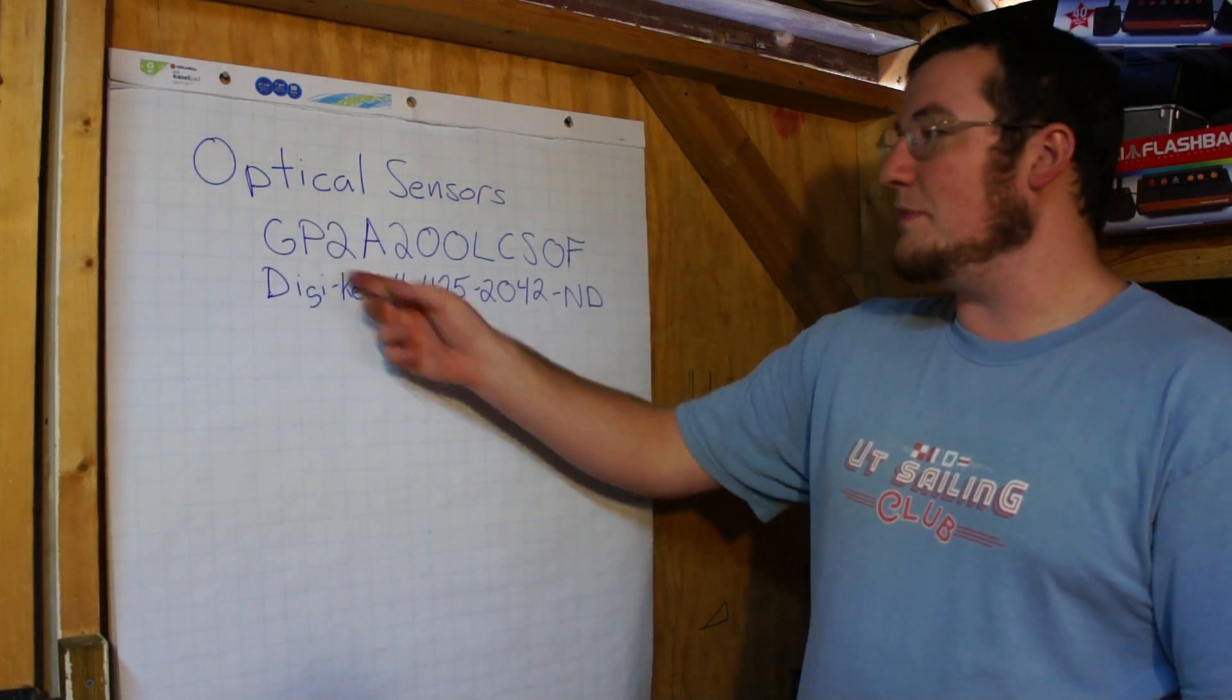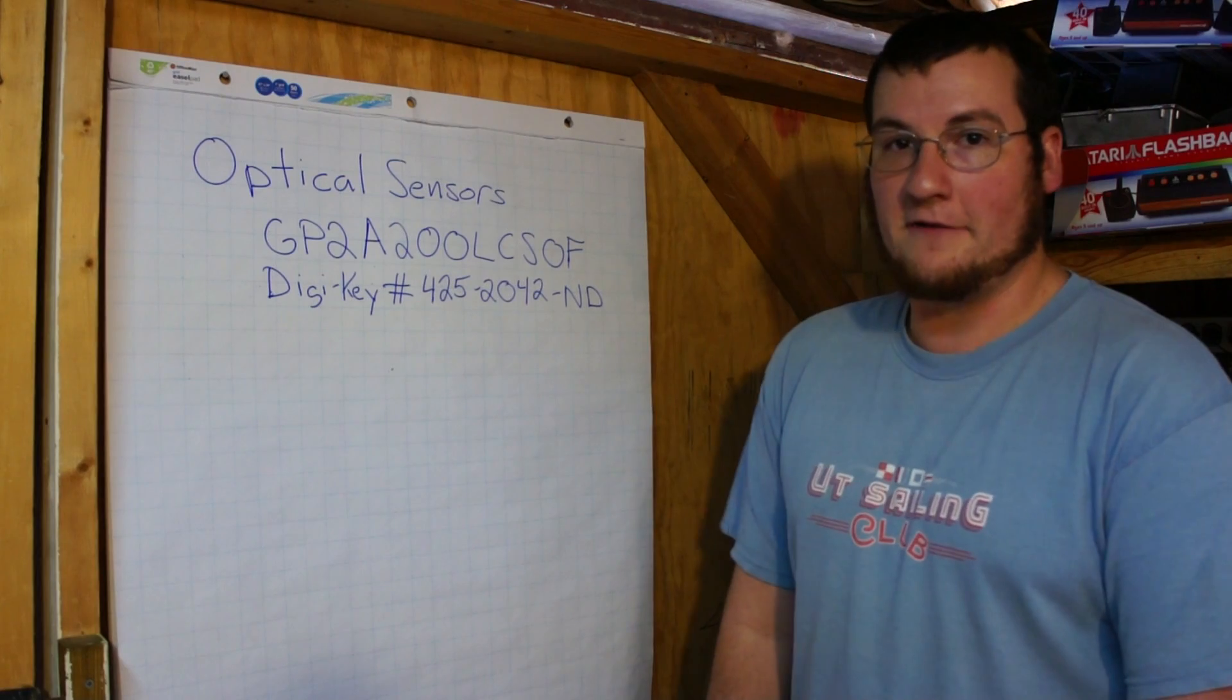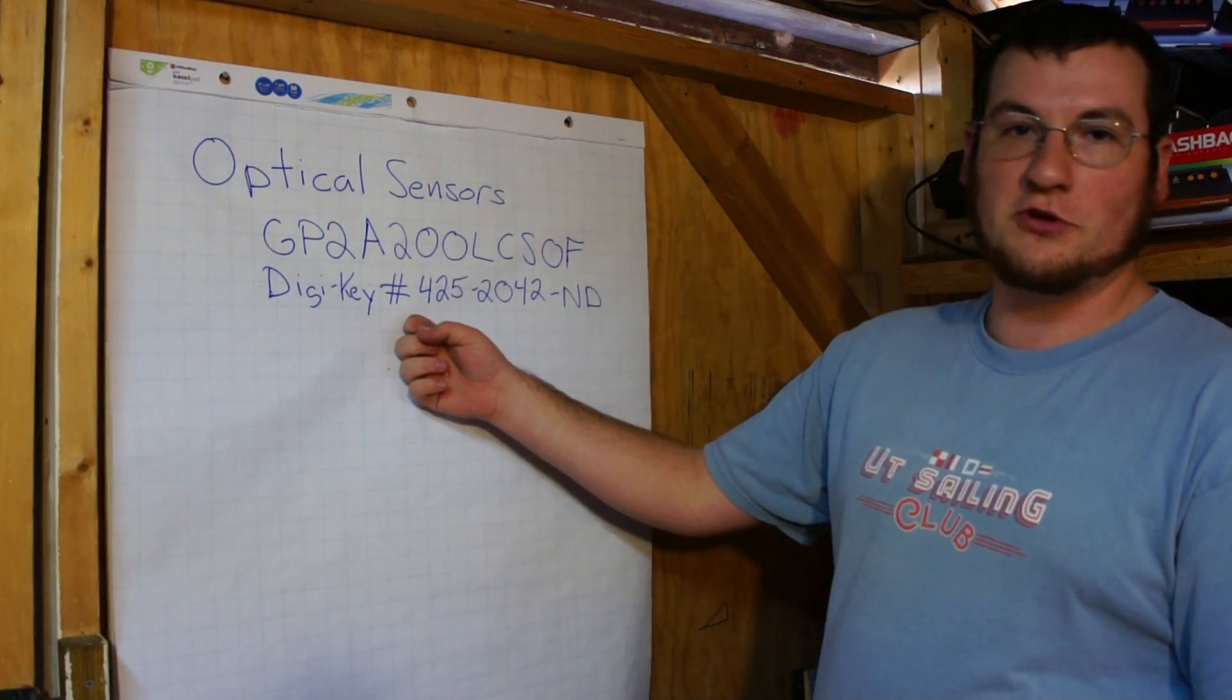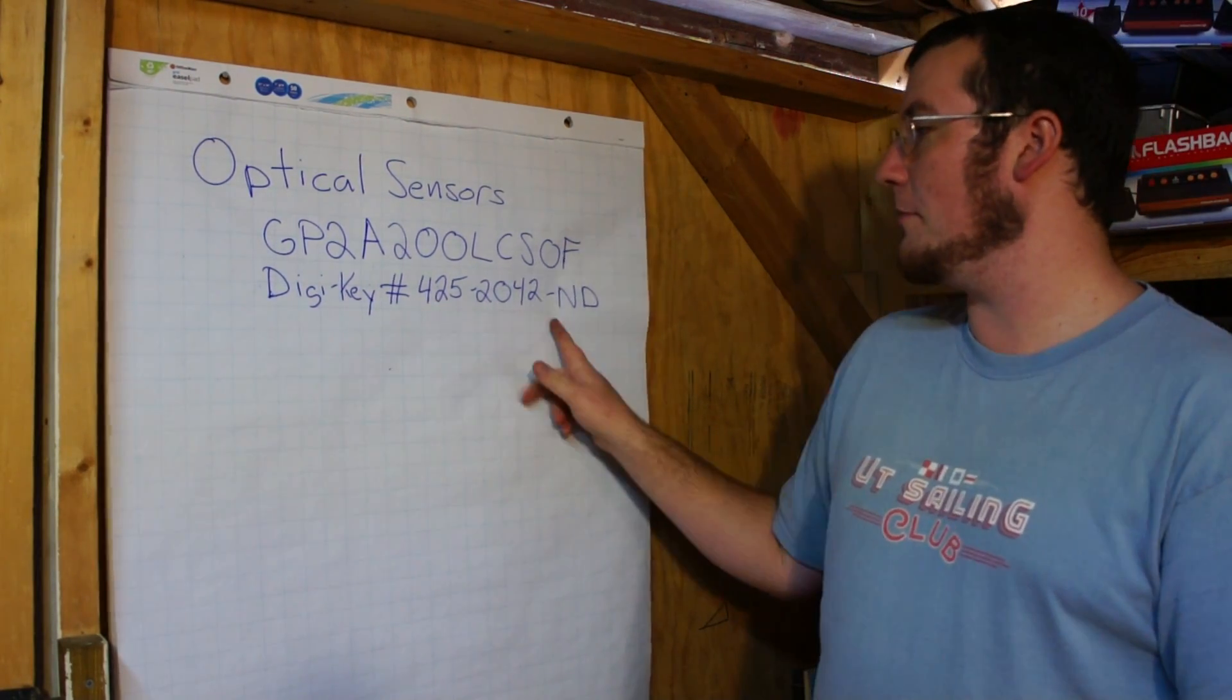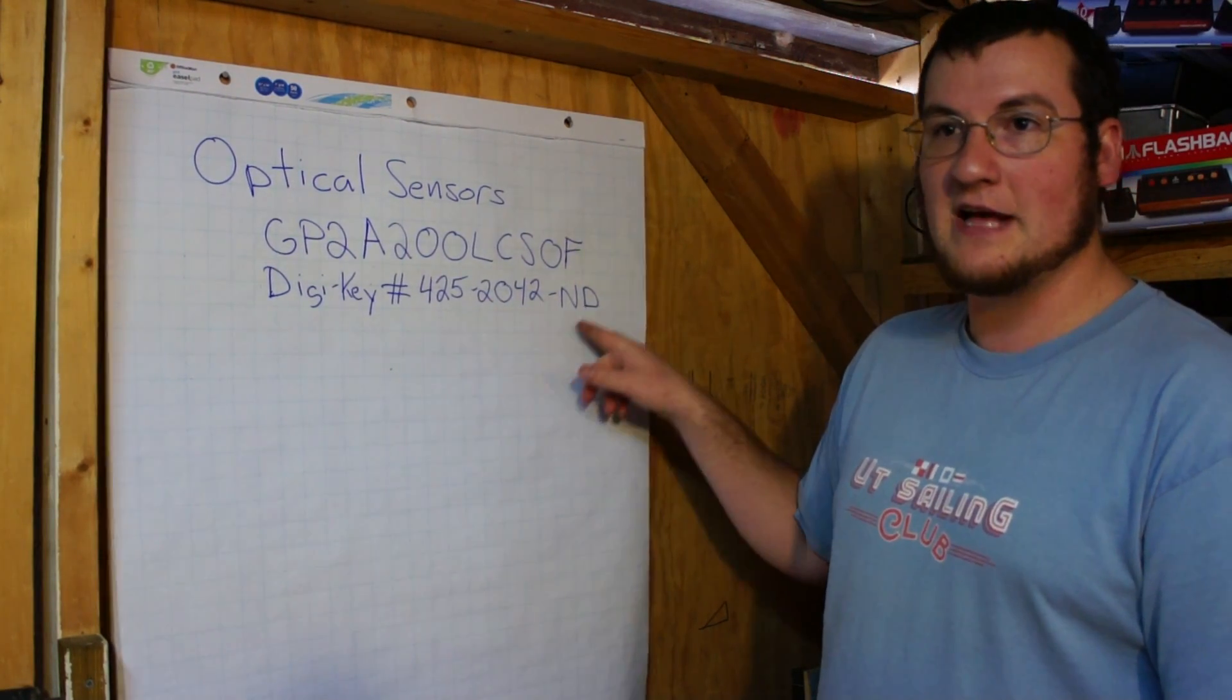We're going to use the GP2A200LCS0F, which you can find on DigiKey with this part number: 425-2042-ND.